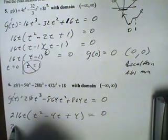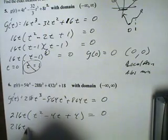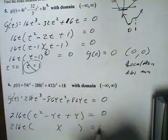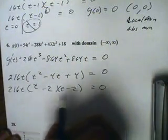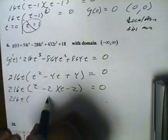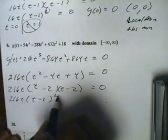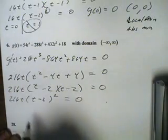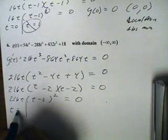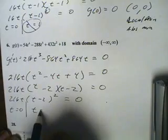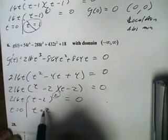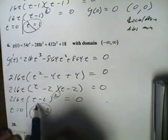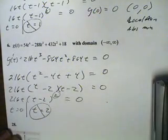This trinomial factors into two binomials of t minus 2 and t minus 2. So, we have 216t times (t minus 2) to the 2nd power, all that equals 0. And when you solve this, we'll get t equals 0. When you solve this side, we get t equals 2. But again, multiplicity 2 implies that this will not be a max or a min. So, our only candidate is t equals 0.